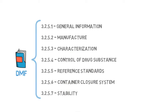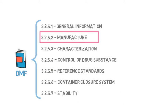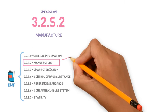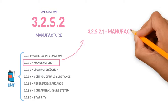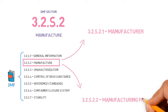In this video, we will talk about Section 3.2.S.2. This is where we will find information about the manufacturer of the API. First, about its manufacturer and the site where it is produced, and then about the manufacturing process.